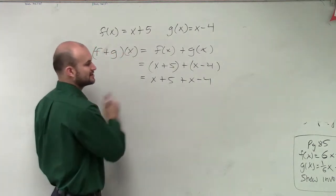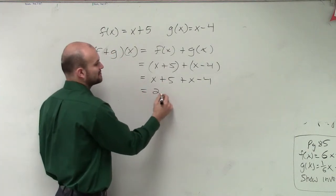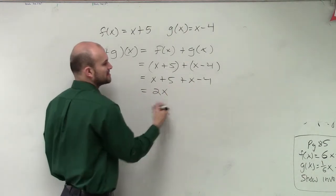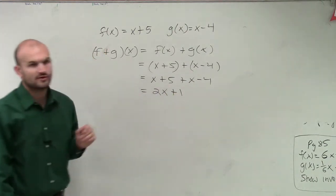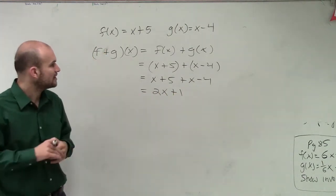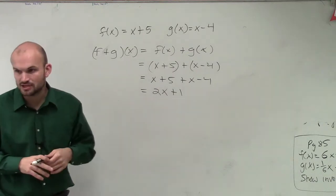Then when we combine like terms, x and our x are the only two that can be combined as for your variable x. And then 5 plus negative 4 is 1. So therefore, your final answer for f plus g of x is going to be 2x plus 1.